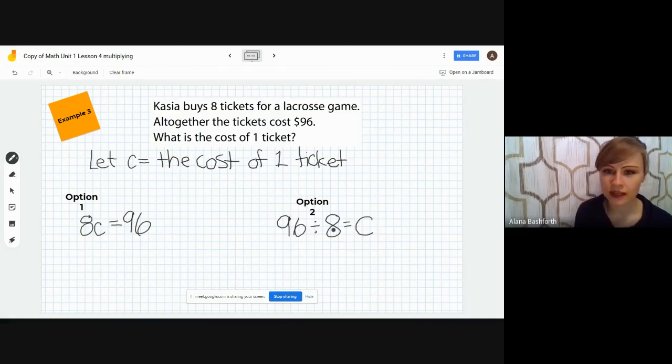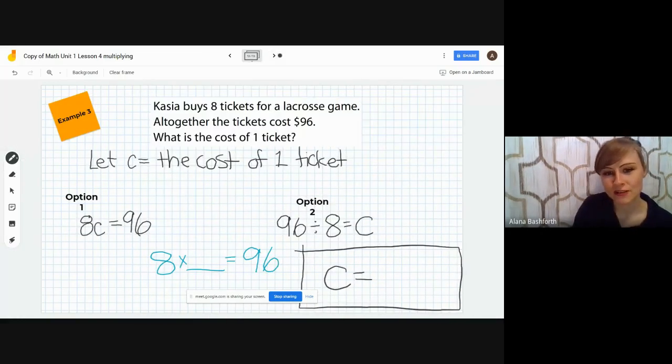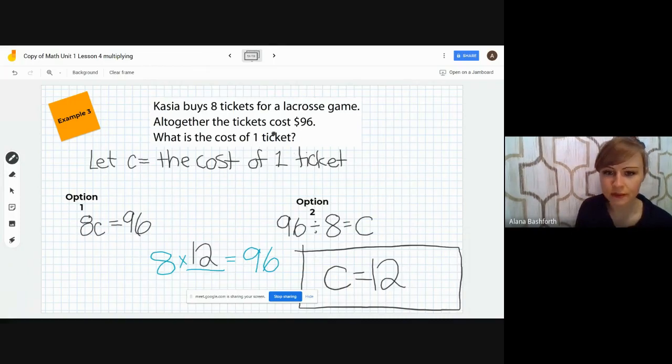Either way, you're thinking 8 times what equals 96? If you know your multiplication facts, you know that answer is 12. That means that the cost of one ticket is $12. So, C equals 12.